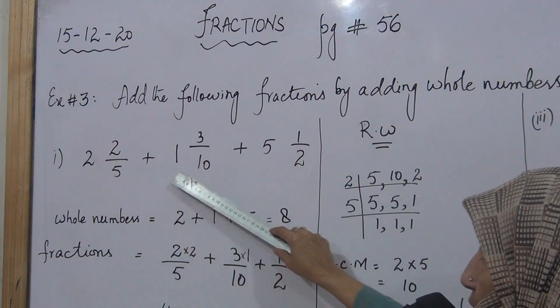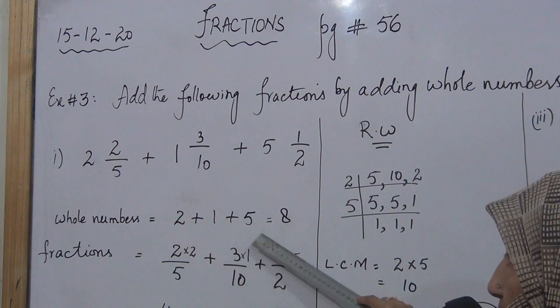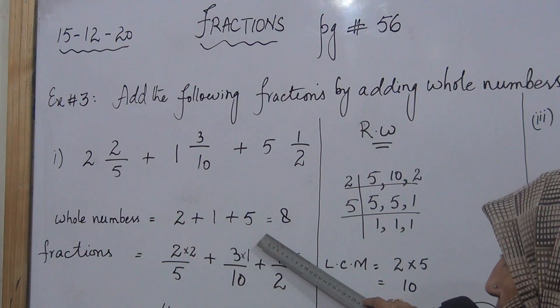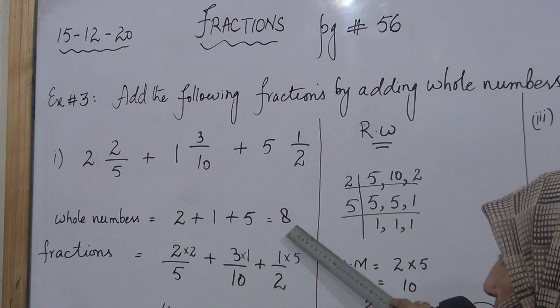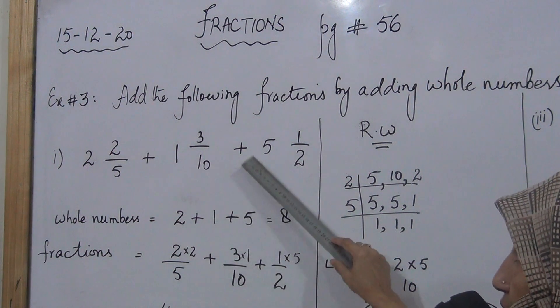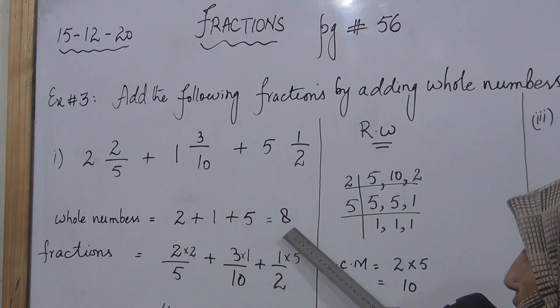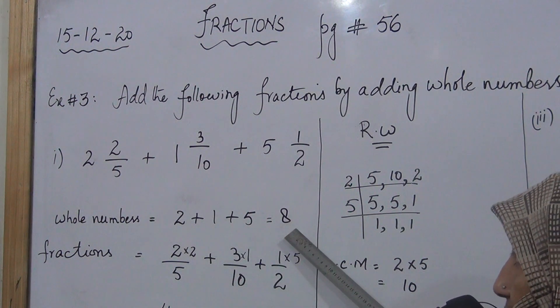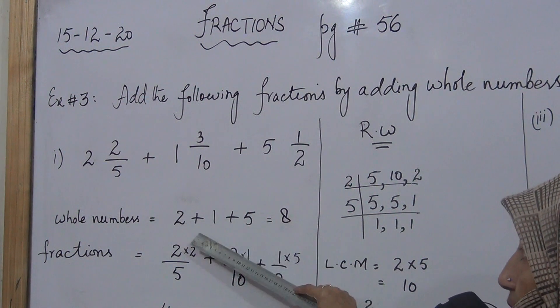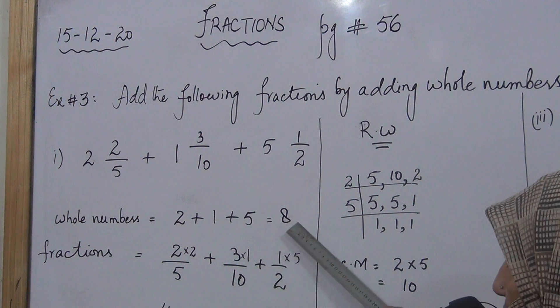We will separate 2, 1, and 5 and add them together. The answer will be 8. 2 plus 1 is 3, and 3 plus 5 is 8.